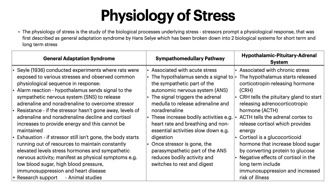On the other hand, we have the hypothalamic-pituitary-adrenal (HPA) system, which is associated with chronic or long-term stress. The hypothalamus starts releasing corticotropin-releasing hormone (CRH), which then tells the pituitary gland to start releasing adrenocorticotropic hormone (ACTH). This hormone then tells the adrenal cortex to release cortisol, which provides energy. Cortisol is a glucocorticoid hormone that increases blood sugar by converting protein to glucose. The negative effects of cortisol in the long term include immunosuppression and increased risk of illness.